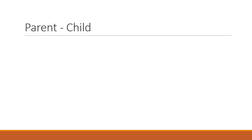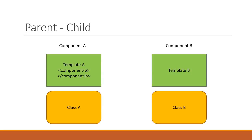Angular components are reusable, so it is only natural that you are going to find a component nested inside another component. This establishes the parent-child component relationship. For example, let's say we have two components, component A and component B. The template of component A contains the selector tag of component B. This makes component A the parent component and component B the child component.